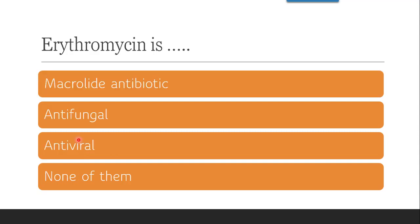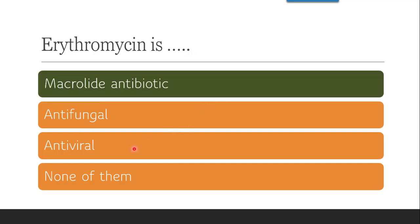The next question is: erythromycin is — a macrolide antibiotic, antifungal, antiviral, or none of them? According to the classification, erythromycin is a macrolide antibiotic, and other examples include azithromycin and clarithromycin. So the correct answer is macrolide antibiotic.